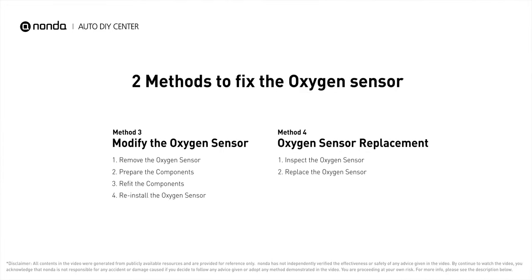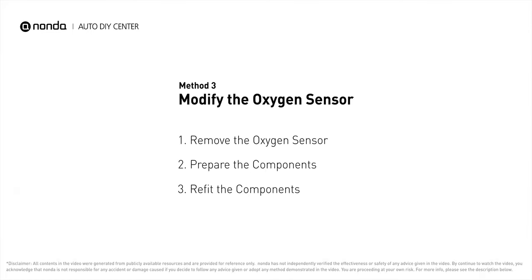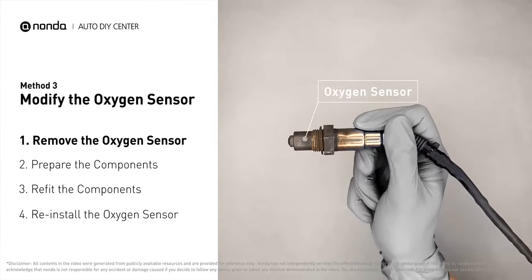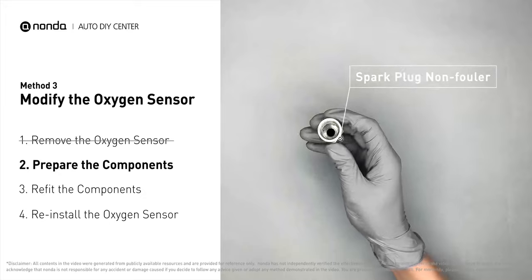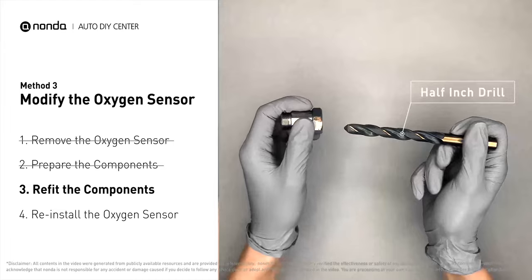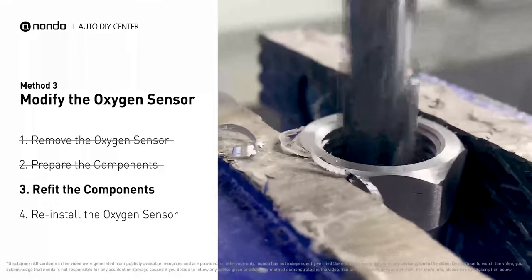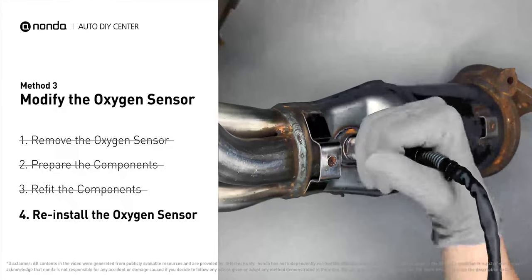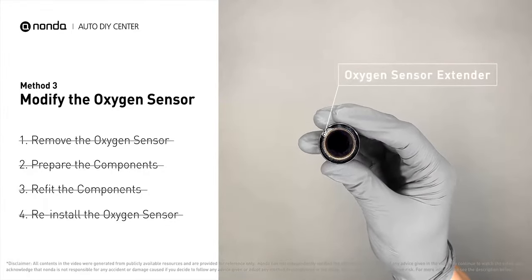Here are two methods to fix the oxygen sensor. Method 3: Modify the oxygen sensor. You can remove the oxygen sensor from the converter and fix it by putting some extra space between the sensor and the converter. First, get a spark plug non-fouler, then use a 1/2 inch drill to refit it. The spark plug non-fouler now has enough space to fit into the oxygen sensor. Put them together and place them back on the catalytic converter. If refitting is too complicated, you can also use parts like an oxygen sensor extender or oxygen sensor socket to create that space.